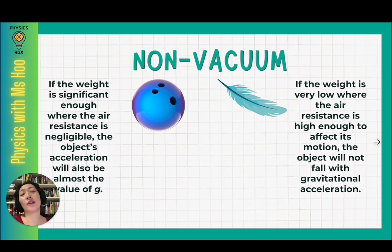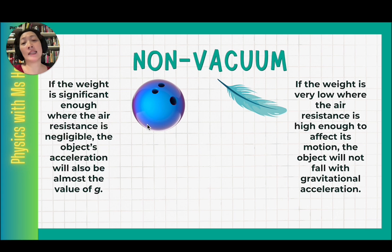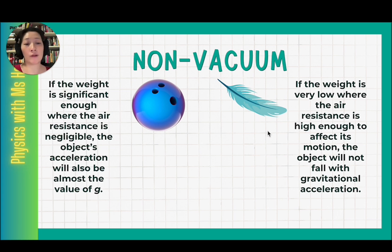What if the objects are not in a vacuum? If the weight is significant enough where the air resistance is negligible, the object's acceleration will also be almost the value of G — the difference between the object's acceleration and G is insignificant, so we can say the object is falling with gravitational acceleration. However, if the weight is very low and the air resistance is high enough to affect its motion, then the object will not fall with gravitational acceleration.